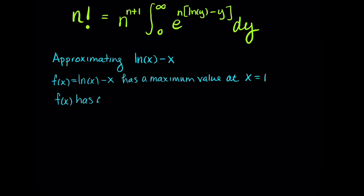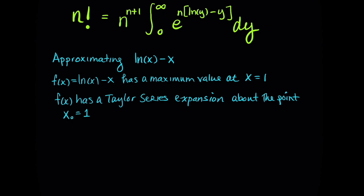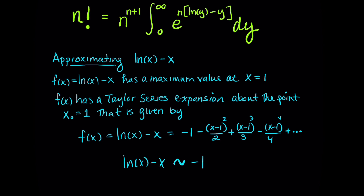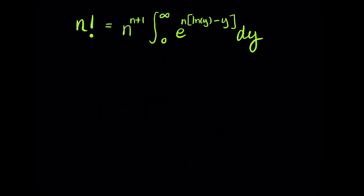We're going to use a Taylor series approximation to this function, expanding about the point x equals 1. You can verify that f of x equals natural log of x minus x has the series: negative 1 minus (x minus 1) squared over 2 plus (x minus 1) cubed over 3, and so on — it's an alternating series. Taking just the first two terms gives a very good approximation to the actual integrand.